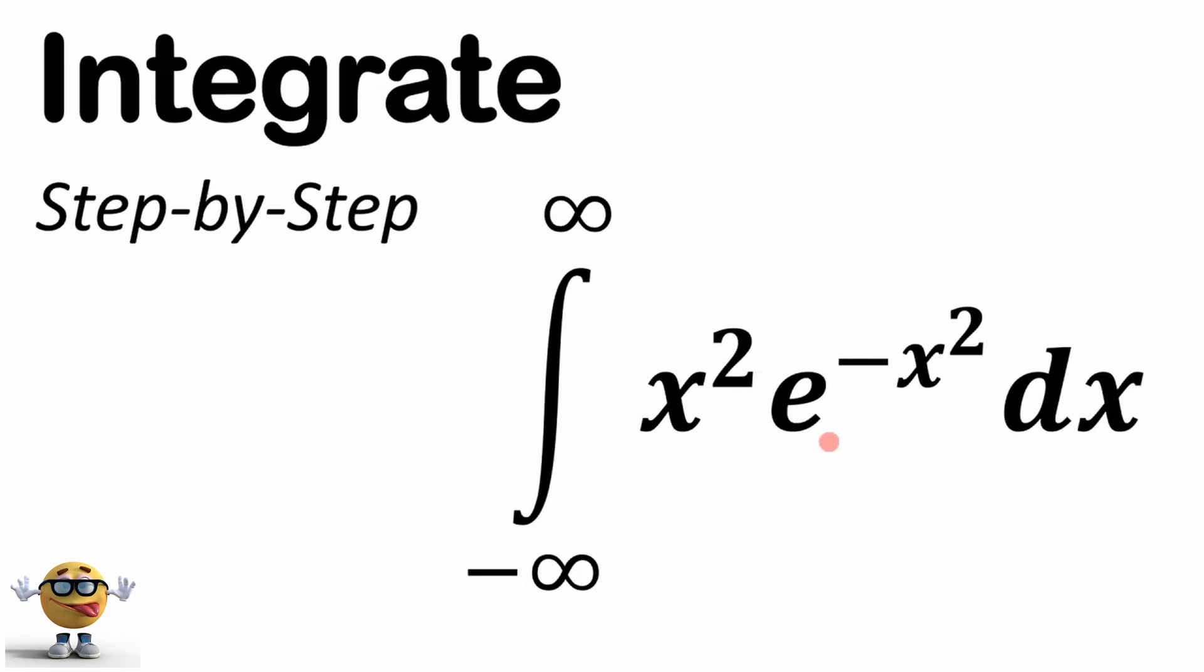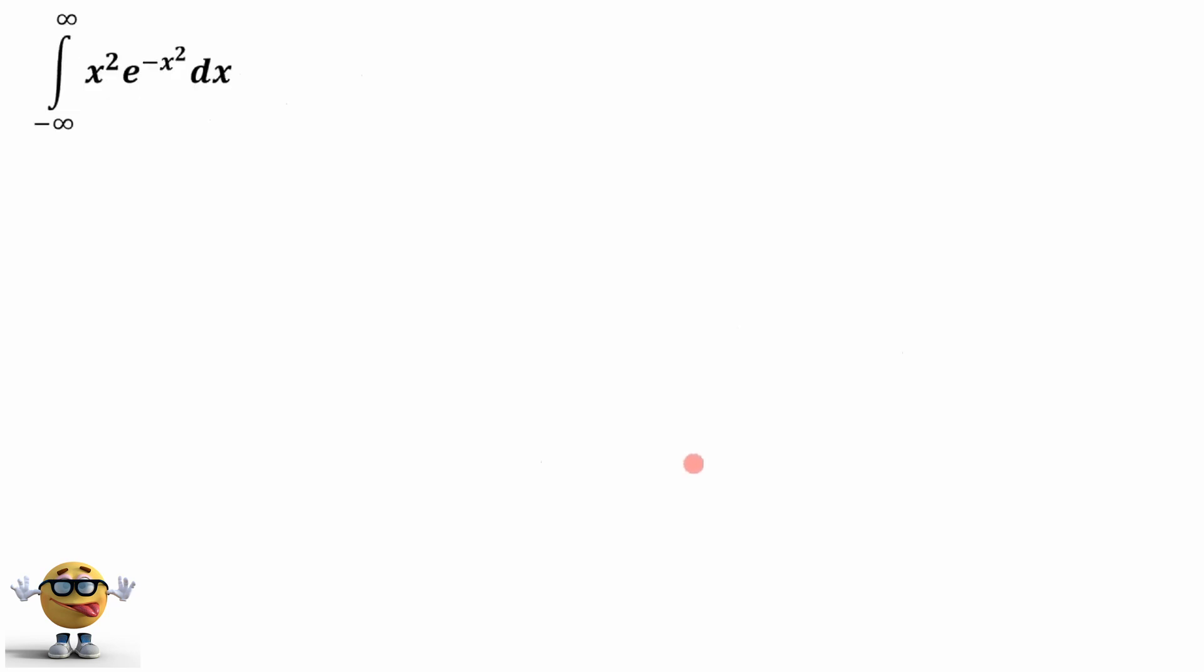Alright gang, we're going to evaluate this integral: x squared times e to the negative x squared from negative infinity to infinity. It's going to be short and awesome. I got many modifications of this integral, so you can check those out. They're all short as well, but let's jump into it.